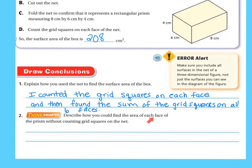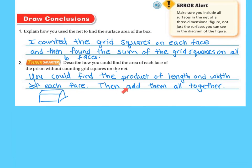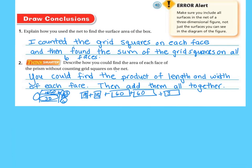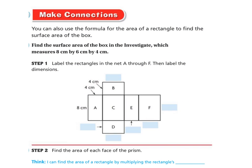Think smarter: describe how you would find the area of each face of a prism without counting the grid squares on the net. You could find the product of the length and width of each face and then add them together. For example, if a face is 6 by 3, that's 18 square units. There's another face just like it, so 18 plus 18. If another face is 6 by 10, that's 60, plus 60. And the last pair is 3 by 10, which is 30, plus 30. Then you add them all together to get the total.